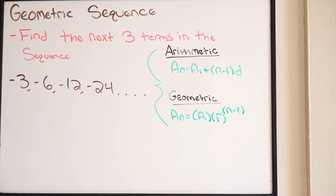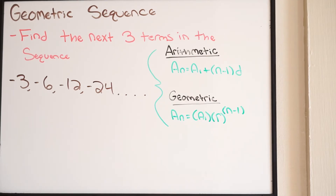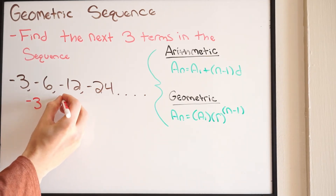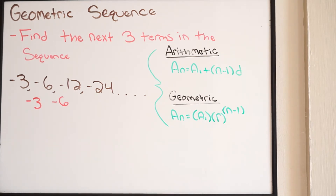So if we look at the problem, it says find the next three terms in the sequence. Our first step is to determine whether we're dealing with arithmetic or geometric. You check your terms — so let's check to see if it's arithmetic. If it's arithmetic, it will have a common difference between all of its terms. Going from negative 3 to negative 6, that's a difference of negative 3. Going from negative 6 to negative 12, that's negative 6. It's not consistent — it does not have a common difference. So this sequence is not arithmetic.